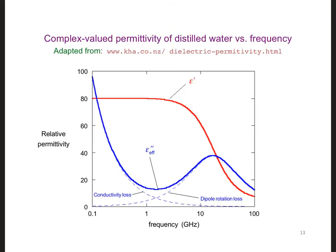Now, we should be aware that both the real and the imaginary parts of the permittivity are frequency dependent. As an example here, is shown a graph of the real part of the permittivity, as well as the imaginary part, which takes into account all the losses, for distilled water as a function of frequency.